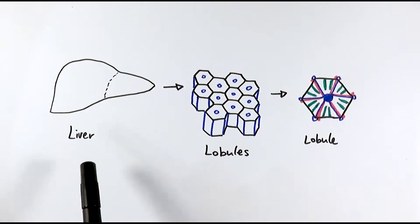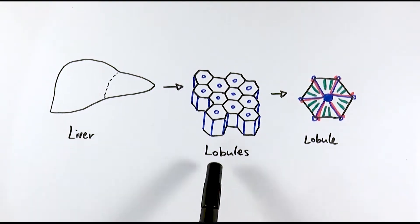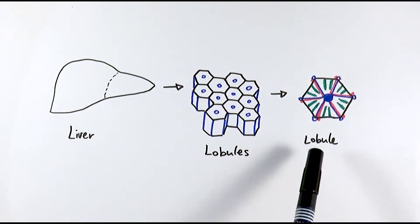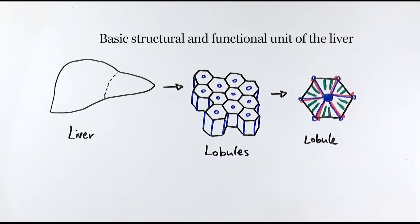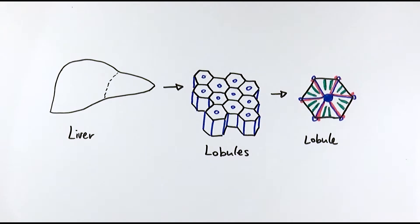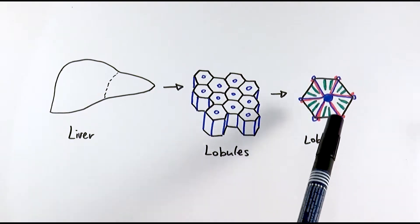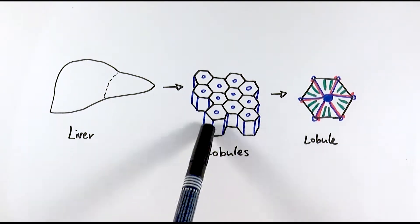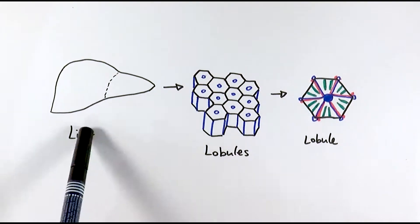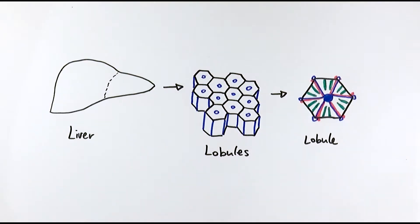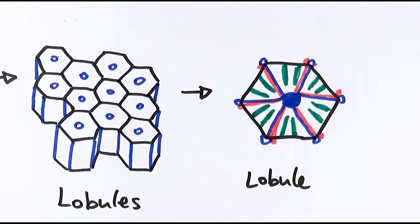The liver can be organised into lobules, and a lobule is the structural or functional unit of the liver. Like how in the kidney we have a structural functional unit which is the nephron, in the liver it will be the lobule. We see loads of lobules forming a particular structure and then it becomes the liver, and here we've got the different parts of the lobule.